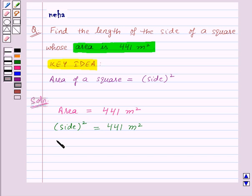Now, let us take square root on both the sides. We will get square root of side square equal to square root of 441 meter. That means the square root and square will get cancelled and we will get side on left-hand side equal to square root of 441 meters.